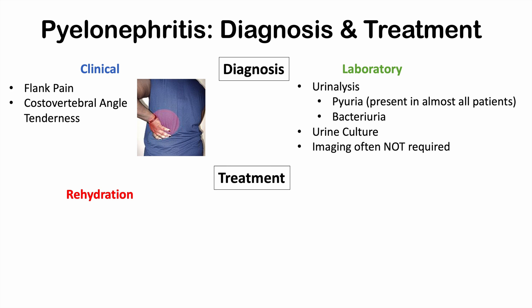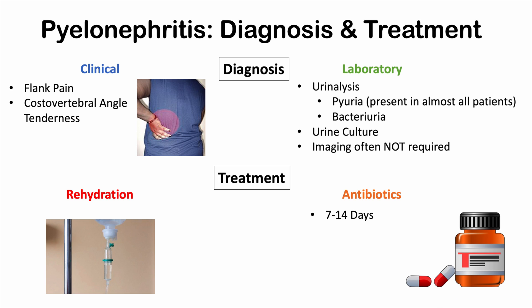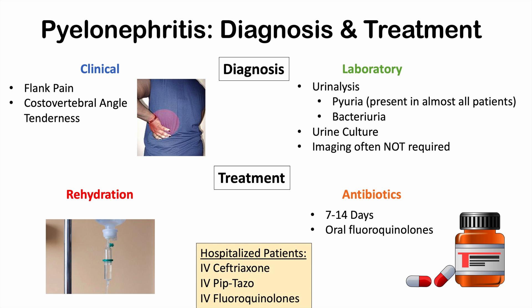Once diagnosed, treatment begins with rehydration, as patients often have nausea and vomiting and are at risk for acute renal failure. The mainstay of treatment is antibiotics, typically taken for 7 to 14 days. Uncomplicated cases can be managed with oral fluoroquinolones in ambulatory care. Complicated cases require hospitalization with IV antibiotics such as IV ceftriaxone, IV piptazosin, or IV fluoroquinolones — though fluoroquinolone use may be limited due to resistance concerns. Once culture and sensitivities return, the antibiotic spectrum is narrowed to target the specific organism.